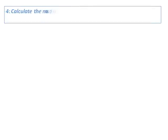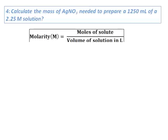Calculate the mass of AgNO3 needed to prepare 1250 milliliters of a 2.25 molar solution. In this case, I need 1250 milliliters of a solution which has a molarity of 2.25. Let's start with the definition of molarity.